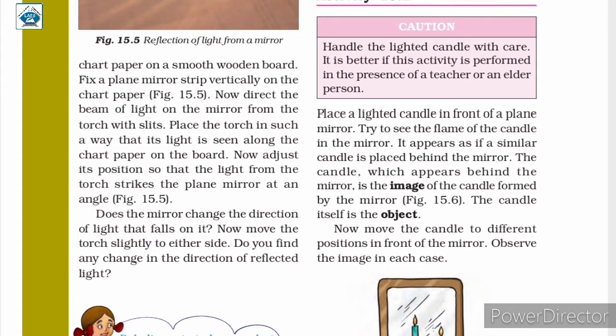Next, we are asked to move the torch slightly to the other side and observe whether there is any change in the direction of the reflected light. The answer is yes — when the torch is slightly moved to the other side, the direction of the reflected ray also changes.